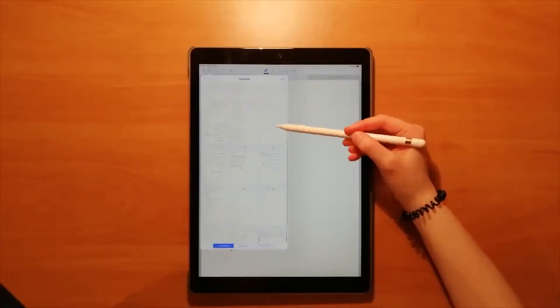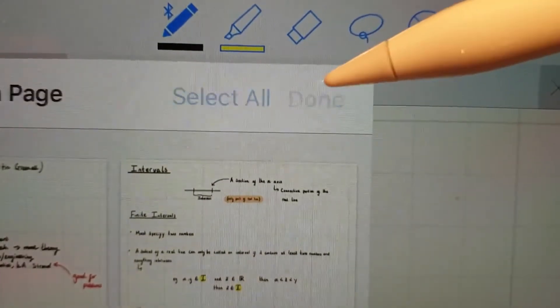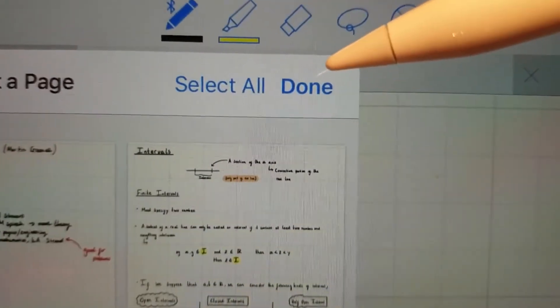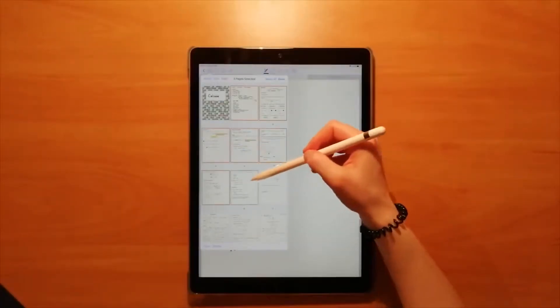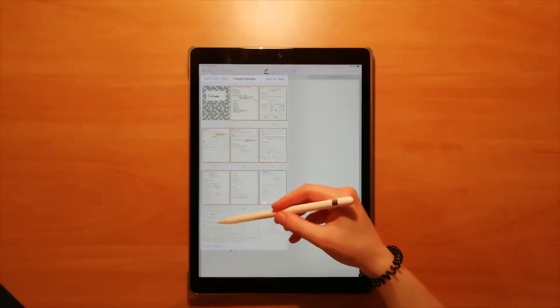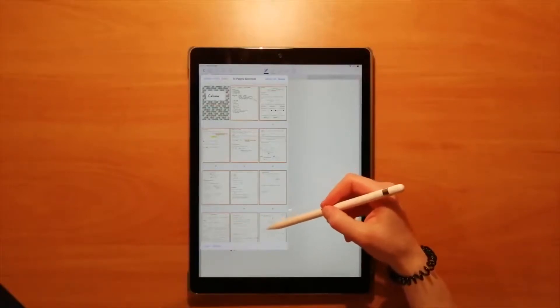To select the pages you want to export, go to the top of the menu and press edit. Then select all the pages you want to export, or if you want to export the whole notebook, press select all at the top of the menu.